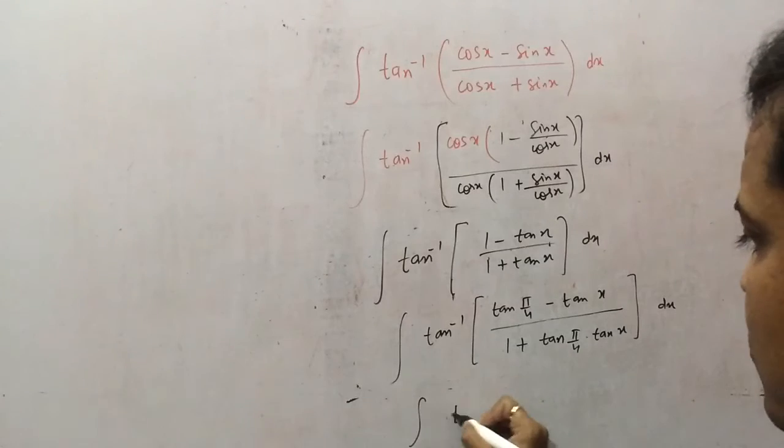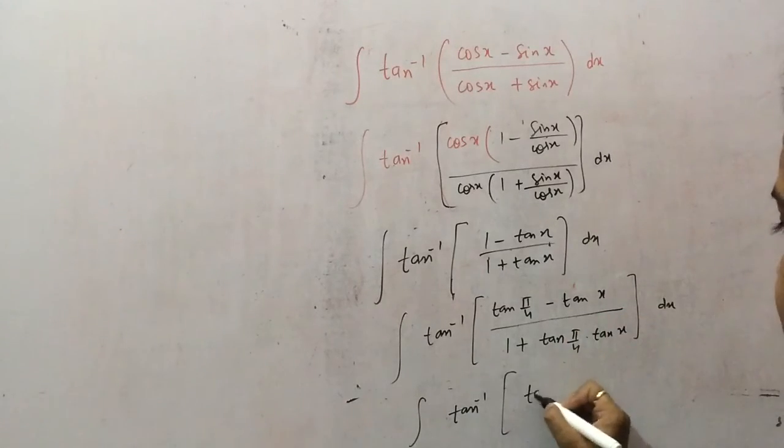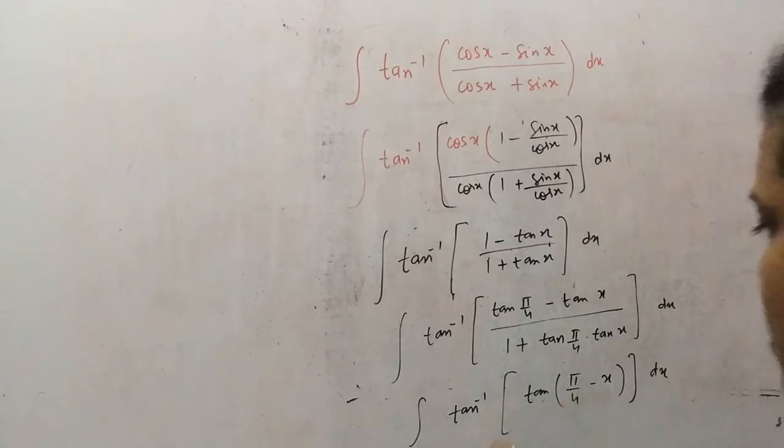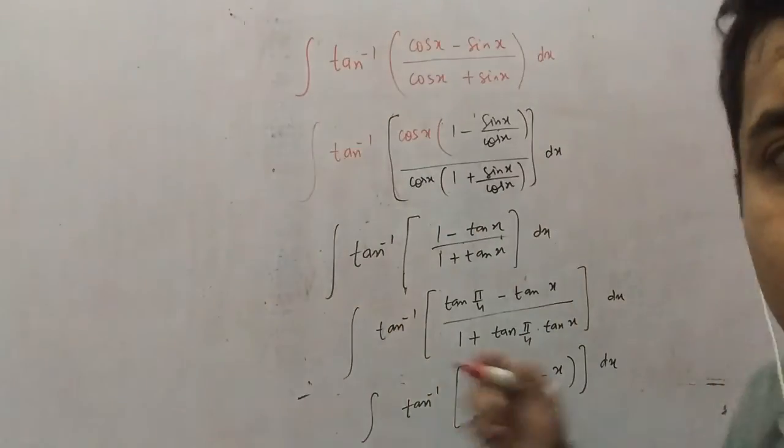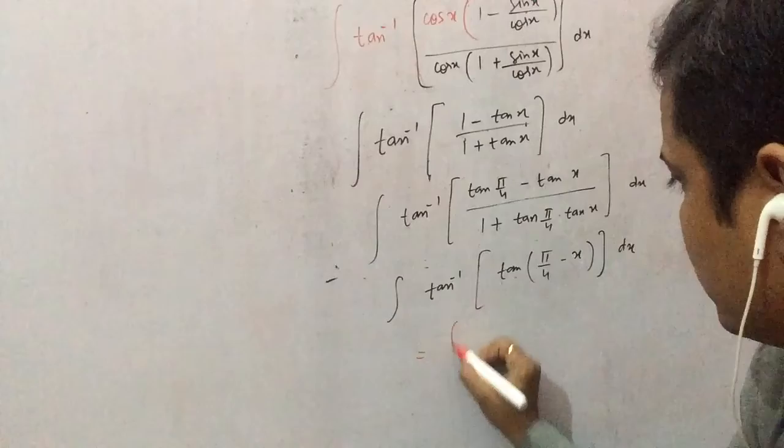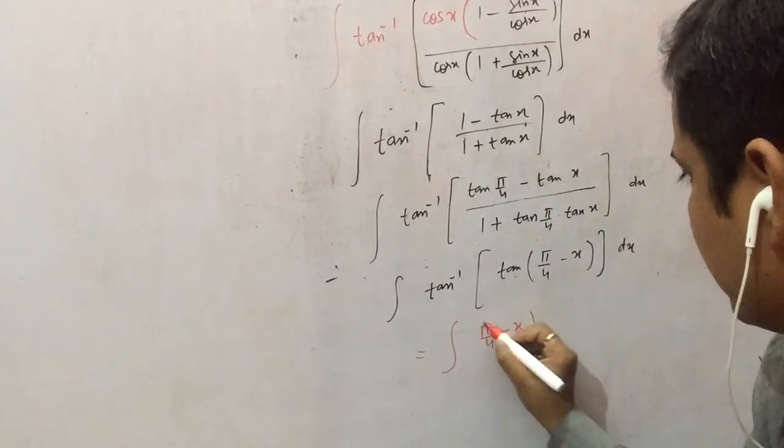So it has become now like tan inverse of tan pi by 4. Tan a minus tan b upon 1 plus tan a tan b is tan a minus b. And now tan tan cancelled out. So you would end up with pi by 4 minus x dx.